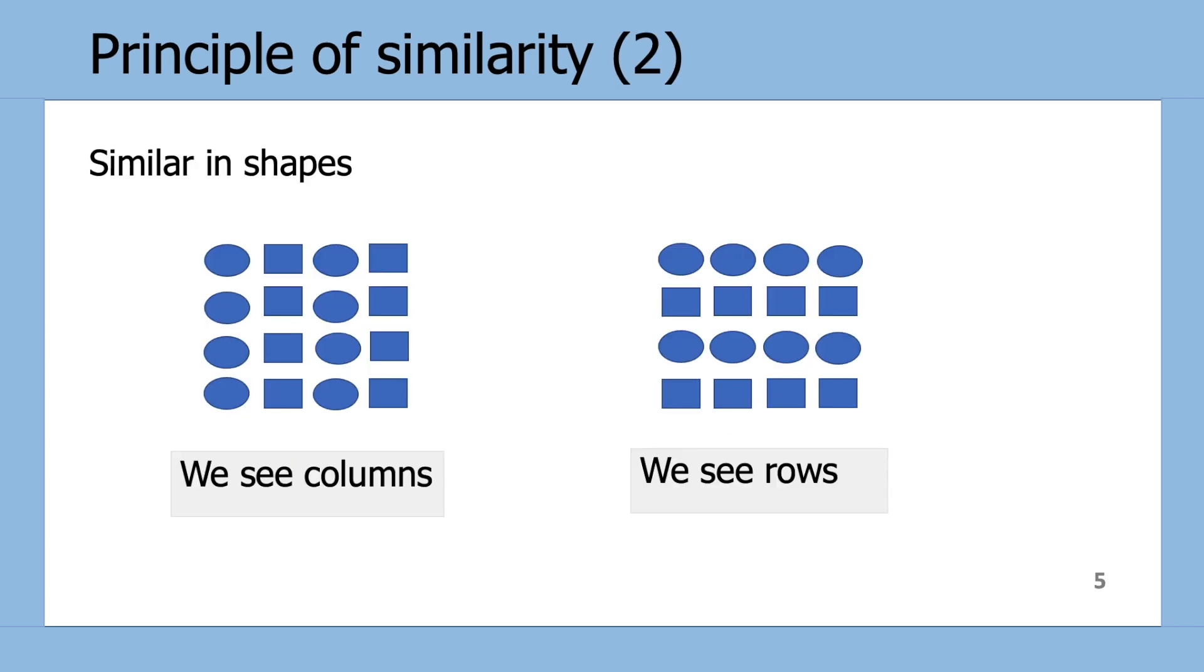Here is another example of the Principle of Similarity, this time using shapes. So again, on the left-hand side we see columns, and on the right-hand side we see rows.